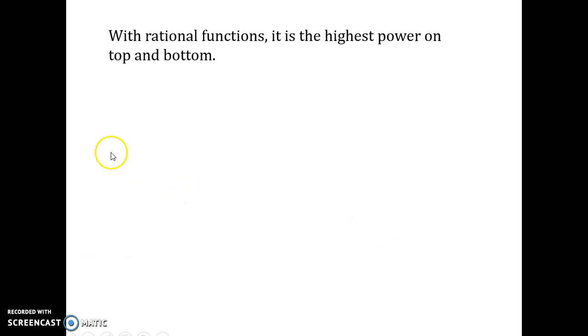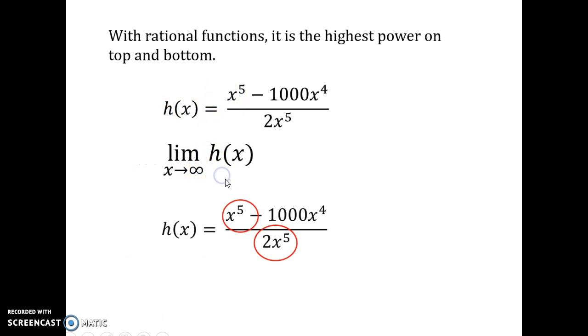So, when we go back to those rational functions, where we have functions on top and functions on bottom, what's going to be most important in the long run are, so as we go for infinity, are the pieces of the polynomials here with the highest power. So, even though this is x to the fourth, this one's x to the fifth.